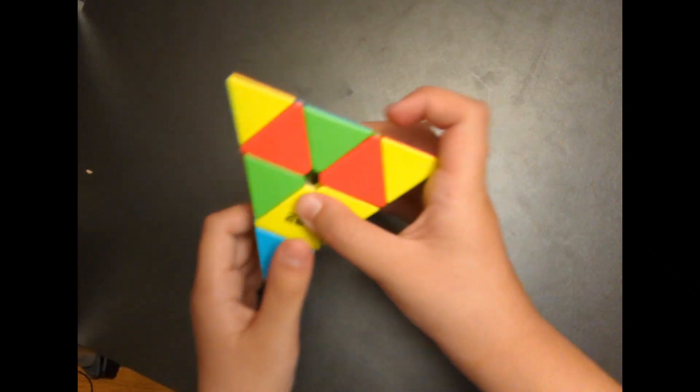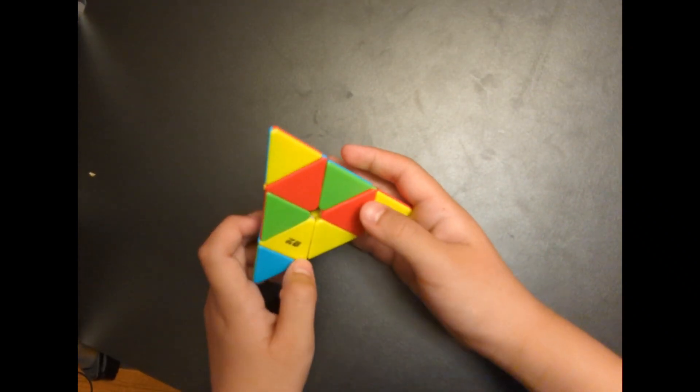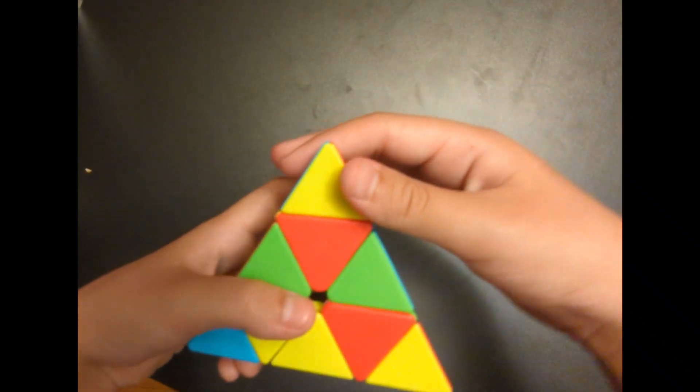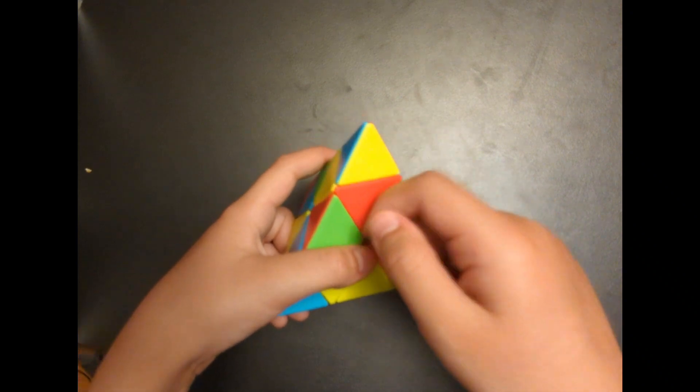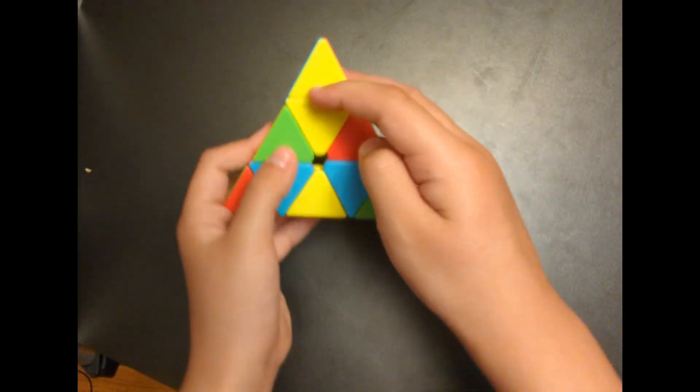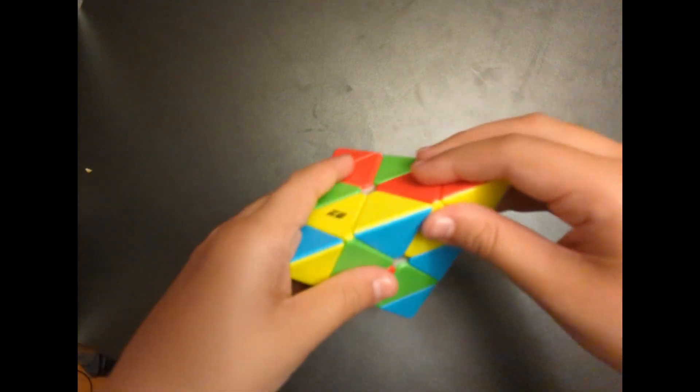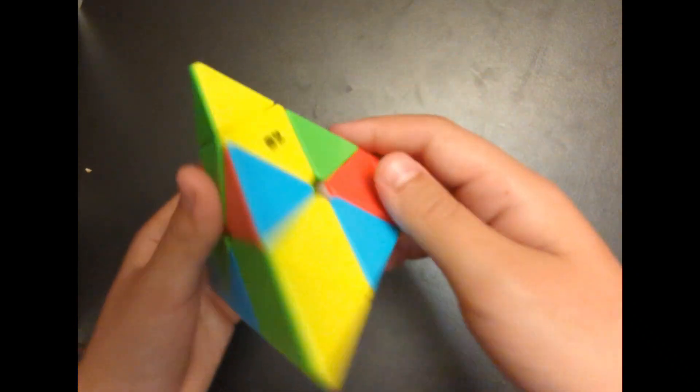Okay. So the first step to solving it is just find any side. I like to find yellow. So what you want to do is make these two match up. Like this. See? Those two are matching. There.